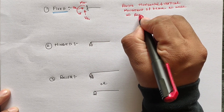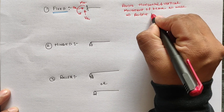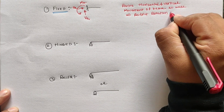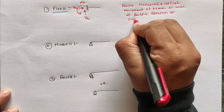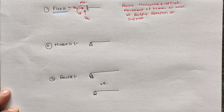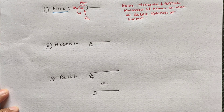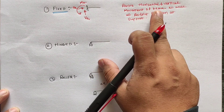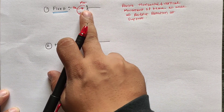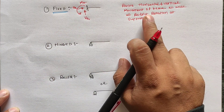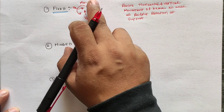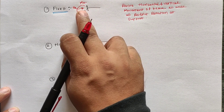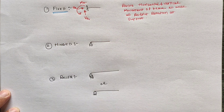Fixed support resists horizontal and vertical movement of the beam, as well as restricts rotation at the support. Whenever resistance is provided, reactions are exerted at that location. So fixed support gives a vertical reaction, a horizontal reaction, and a moment reaction.